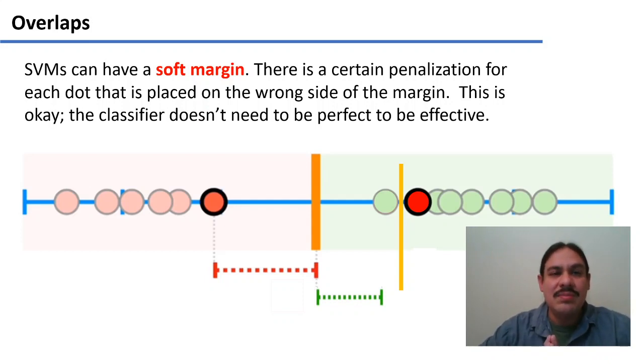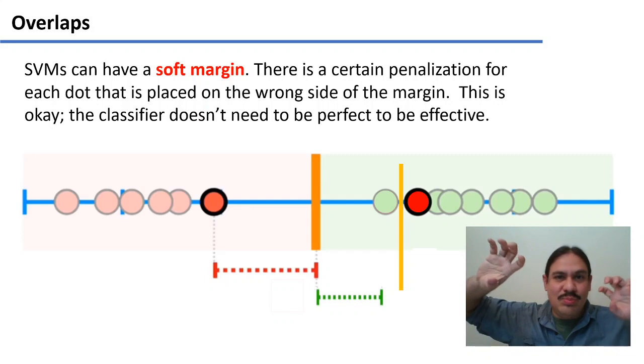So by softening the margins, we can still get a maximum amount of separation between these two blobs.